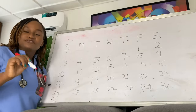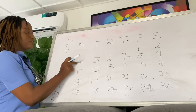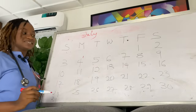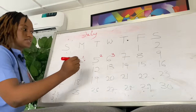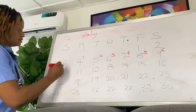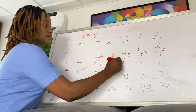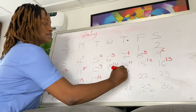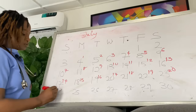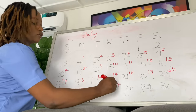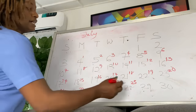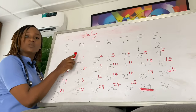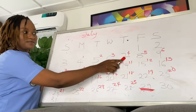To calculate your cycle length, imagine the first day you see period blood is July 4th — that is your Day 1. So July 5th is Day 2, July 6th is Day 3, and so on. Let's say you bled for about four days, up to July 7th, and then you don't see your period again.